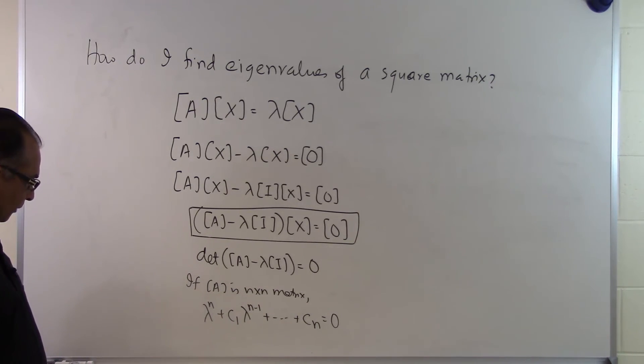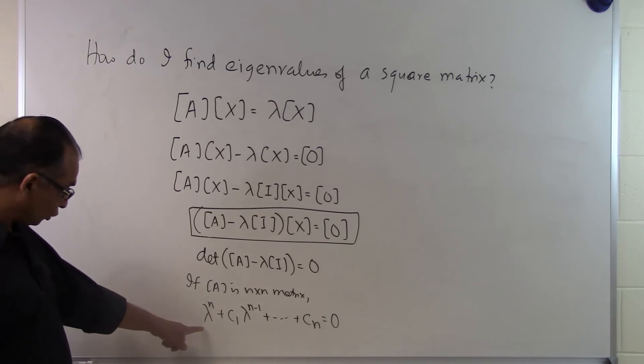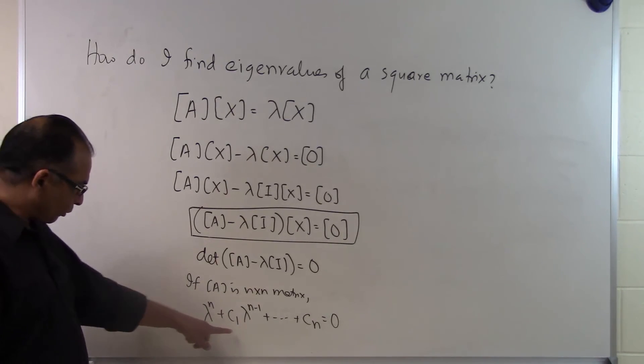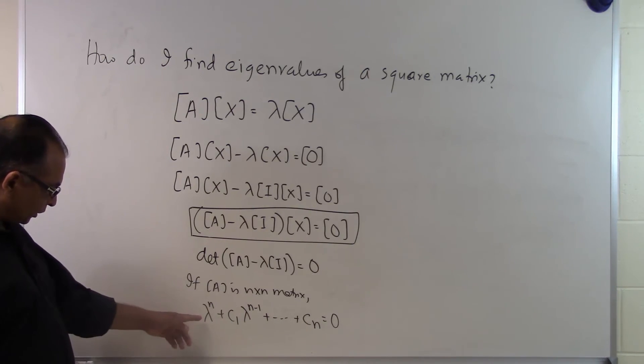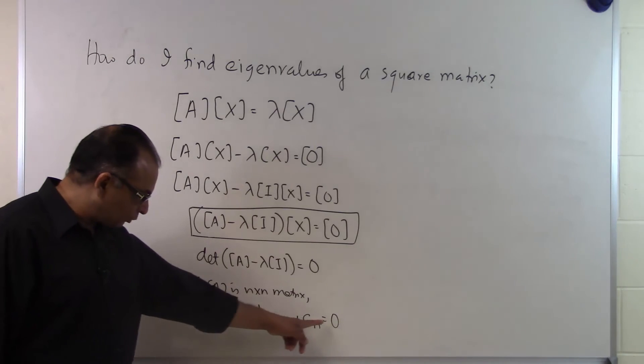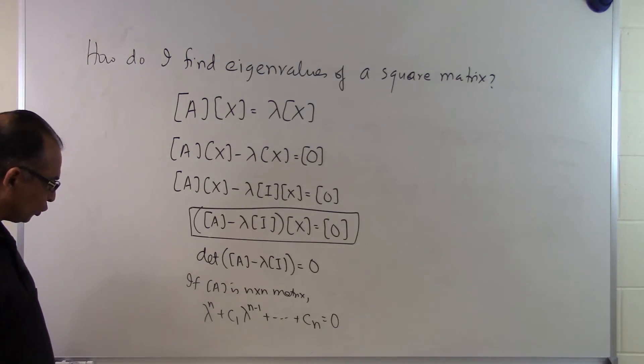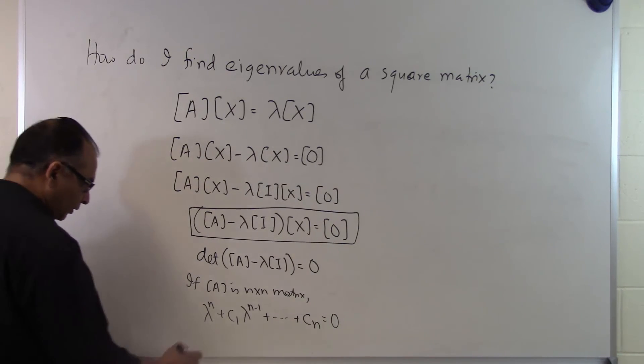So you're going to have a polynomial equation. You're going to have a polynomial equation and the polynomial order of this polynomial equation will be N. So since we have an Nth order polynomial equal to zero, you're going to get N roots of that polynomial and those will be the eigenvalues of the A matrix.